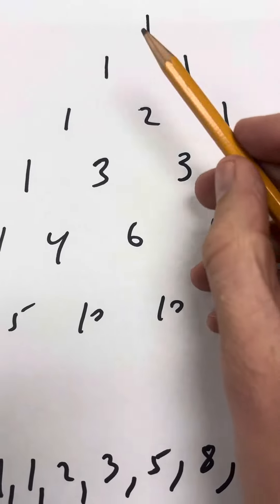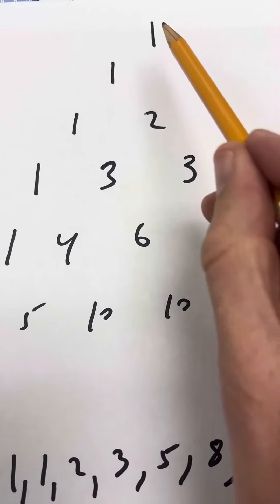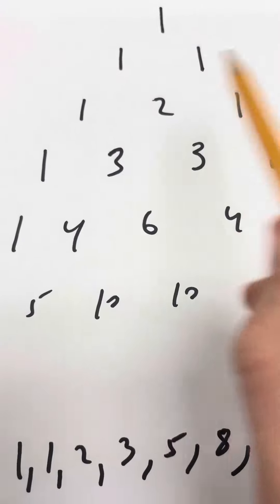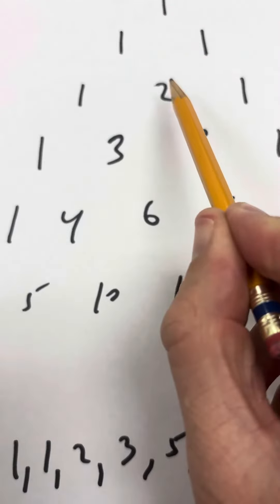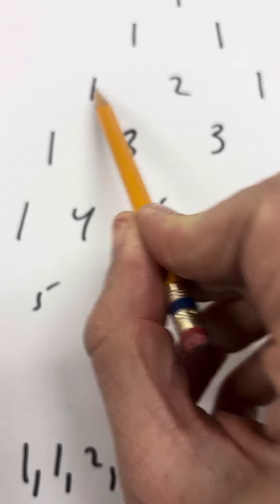This is known as Pascal's Triangle. You've probably seen it before. It starts with a 1, and then a 1 and a 1, and then a 1, 2, 1. You always add the two numbers above it to get the number below it, but you start with a 1 and end with a 1.